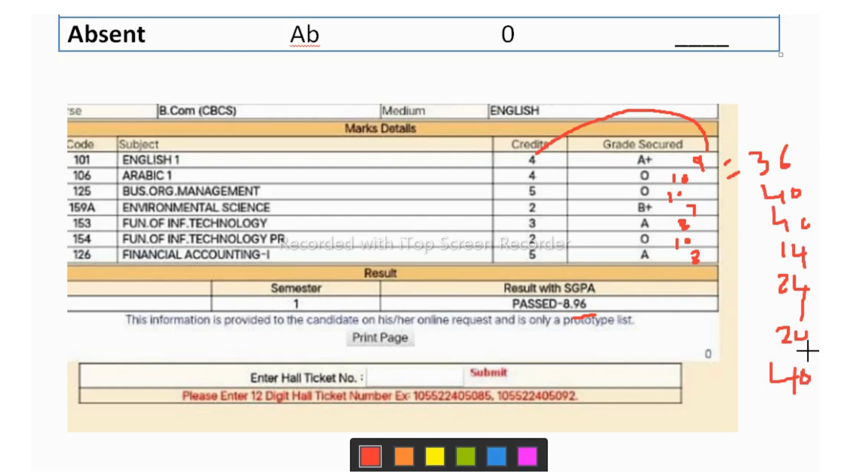Now you have to add all these numbers. So what you will get, you will get 224. This is the marksheet of one of my students. So now 224, this is the calculation. If you add all these numbers, the answer will be 224. Now what you have to do after getting this, you have to calculate this credit. Now 4 plus 4 plus 5 plus 2 plus 3 plus 2 plus 5, what it will be? It will be 25.